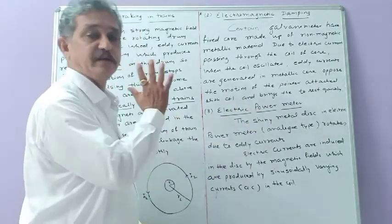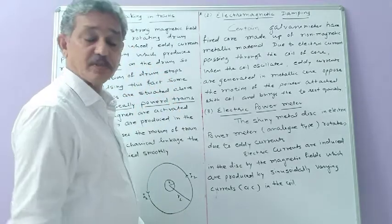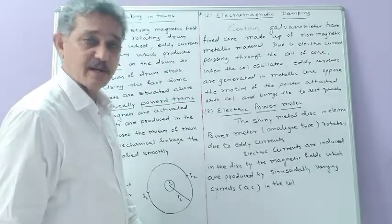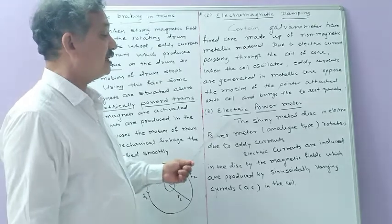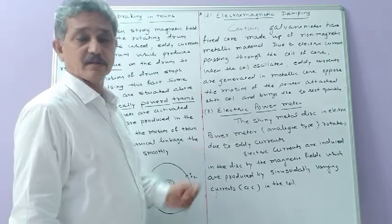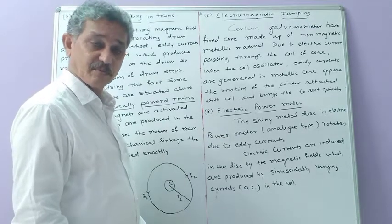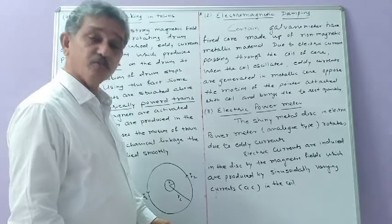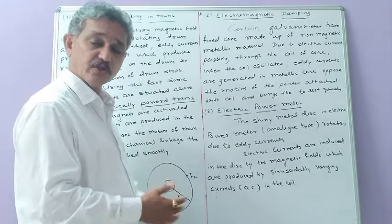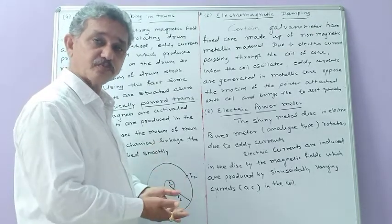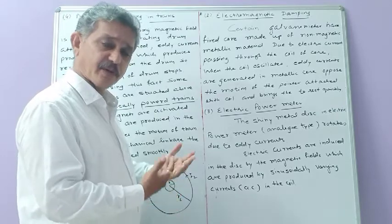This is the case of electromagnetic damping. The next application is the electric power meter — the electric meter used in every house to count the electric bill.